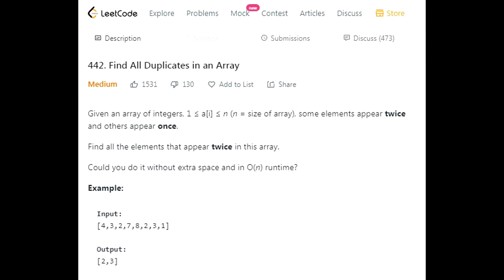For problem 442, you are given an array of integers where some elements appear twice and others appear once. The objective is to find which elements appear twice. For the example, you have an array of 4, 3, 2, 7, 8, 2, 3, 1 and your answer will be 2, 3 with the numbers put into a new list.